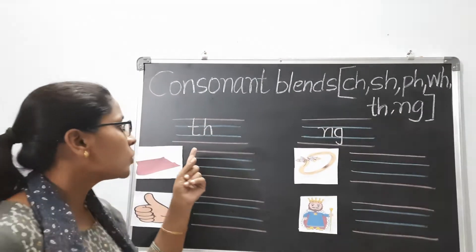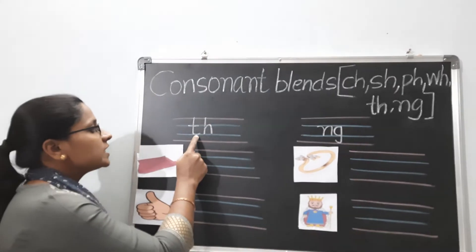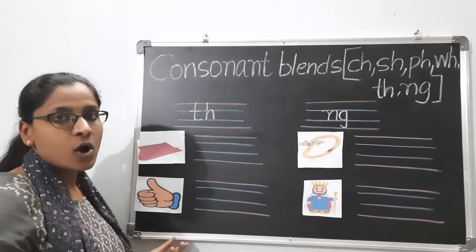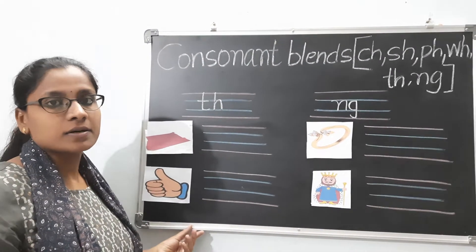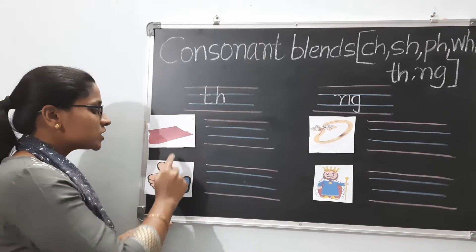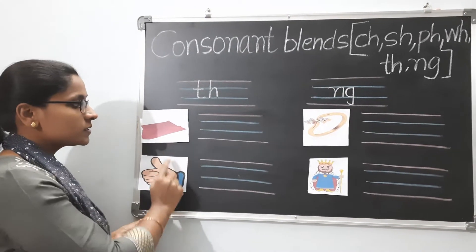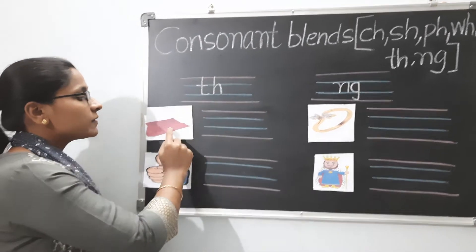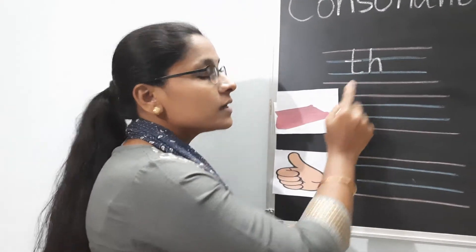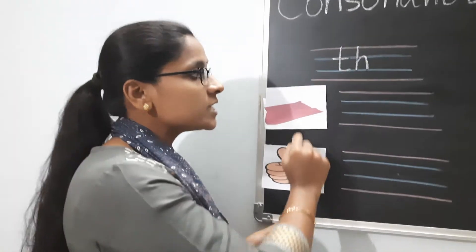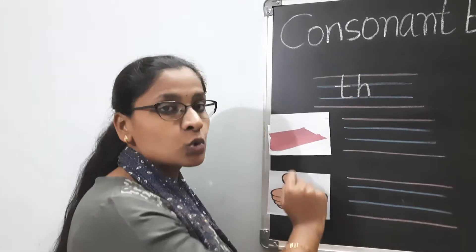So here TH makes the sound TH. Can you see children, we have two pictures for which we have TH blend. That is TH blend in these two words.